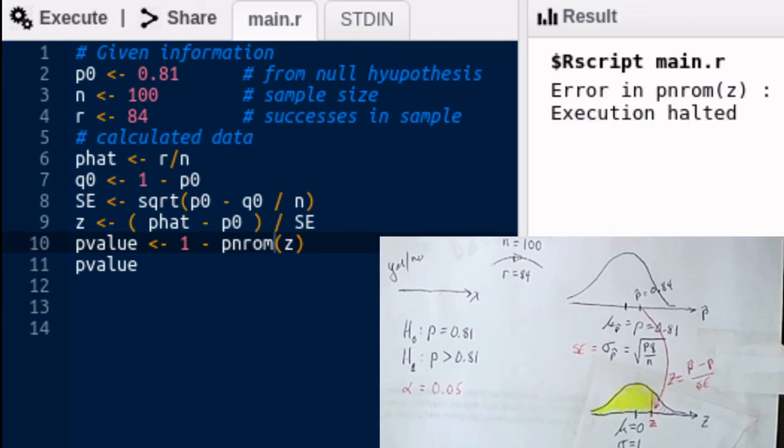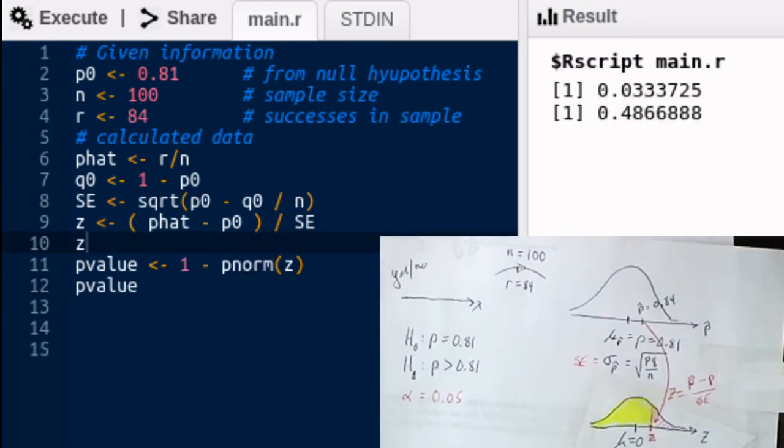Oops, I got an error. Notice the typo error. Okay, I corrected the spelling error on P norm. I asked it to tell me what Z is and what the P value is. The Z value, the answer to our question in the homework, is 0.33, so on. The P value is really quite high in this case. It's 48%. So we would fail to reject the null hypothesis in this particular case.